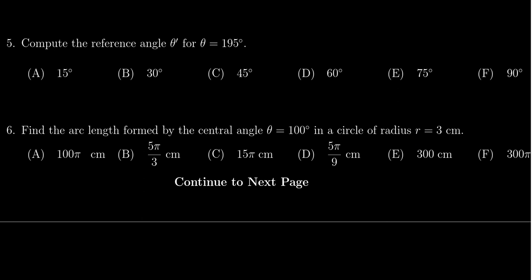To compute arc length, we use the formula s = rθ, where s is the arc length, r is the radius, and θ is the angle measurement. However, θ must be in radians. Since the angle was given in degrees, we need to convert it first.